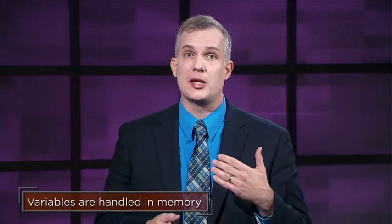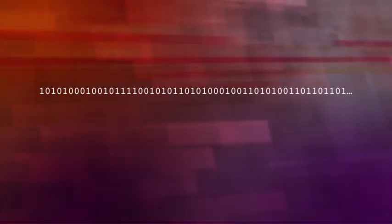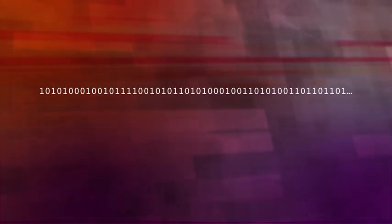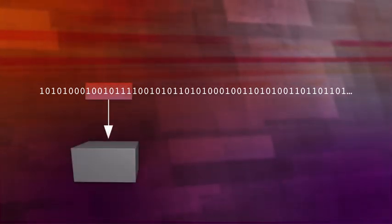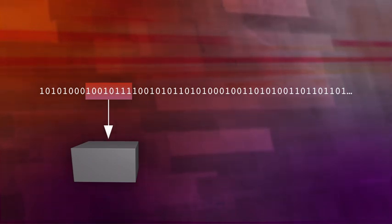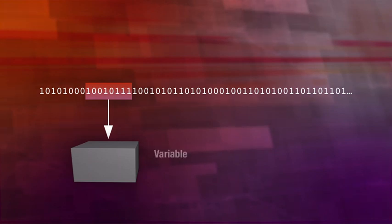Variables are handled in memory. A computer's main working memory is made up of lots of locations, each of which is capable of storing just a one or a zero. However, as programmers, we don't write in machine language. What programming languages do is let us take a section of that memory — of ones and zeros — and use it for our own purpose. This section of memory is what we call a variable.